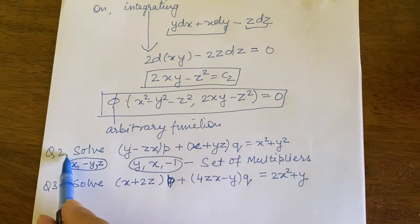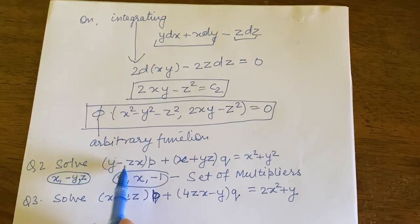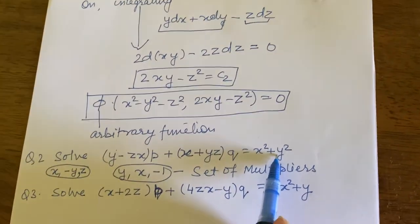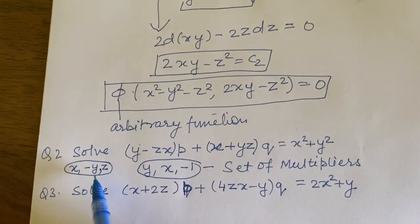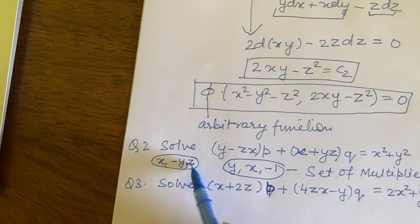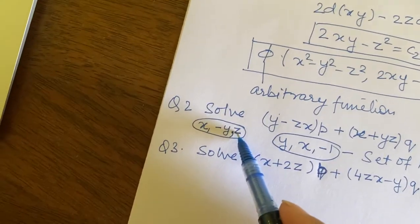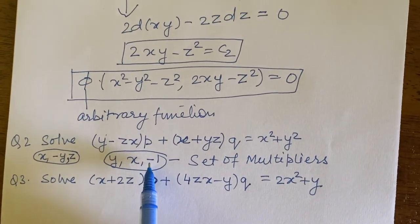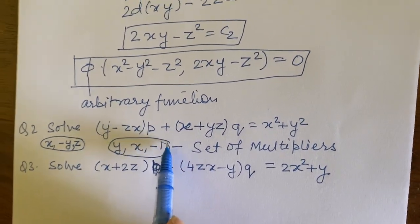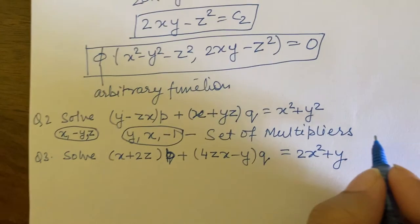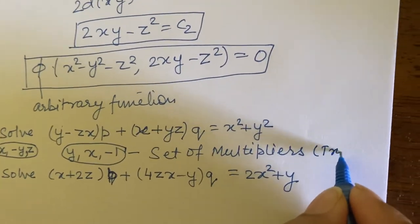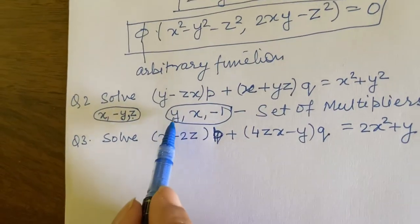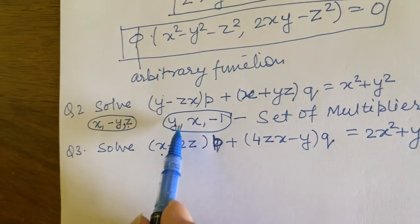In question number 2 — (y−zx)p + (x+yz)q = x²+y² — we will also take multipliers as x, −y, −z to get the denominator 0, and then take multipliers as y, x, −1 to again get the denominator 0 and obtain the two answers. This is something you should try yourself. For this question, the first multipliers are x, −y, −z and the second multipliers are y, x, −1.